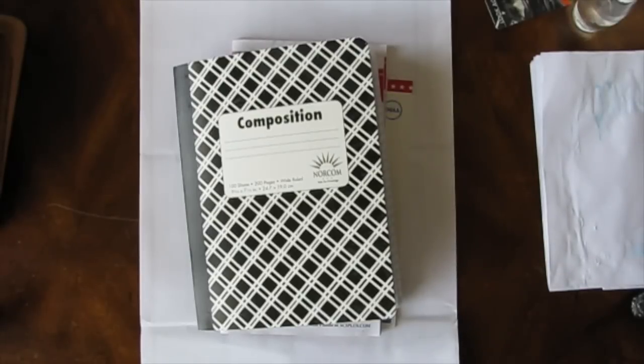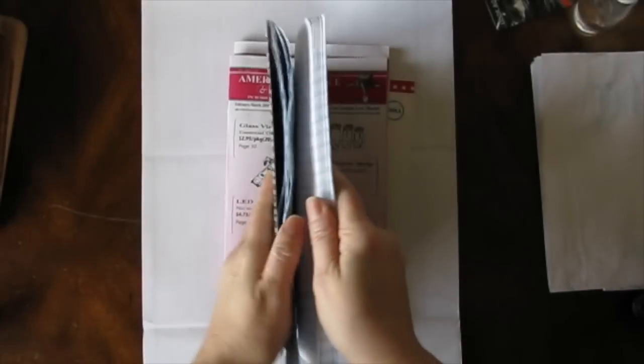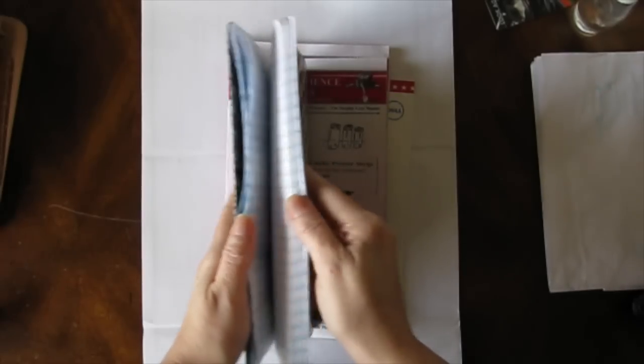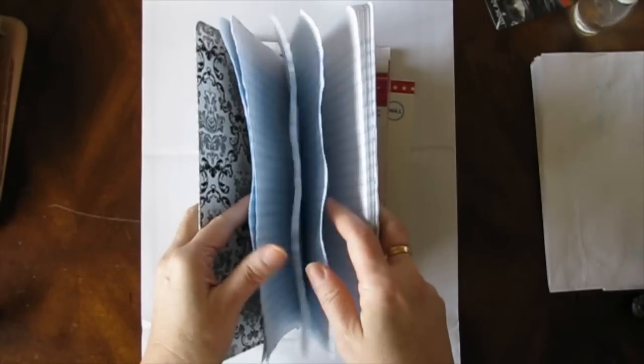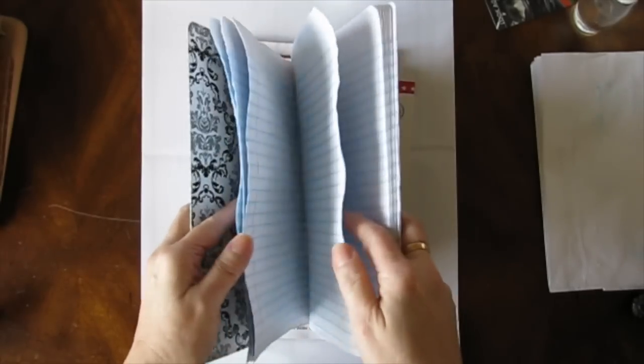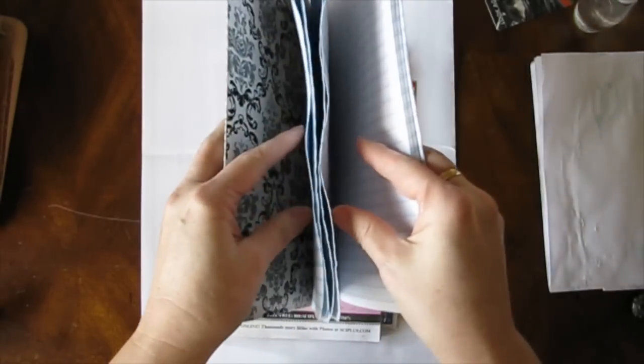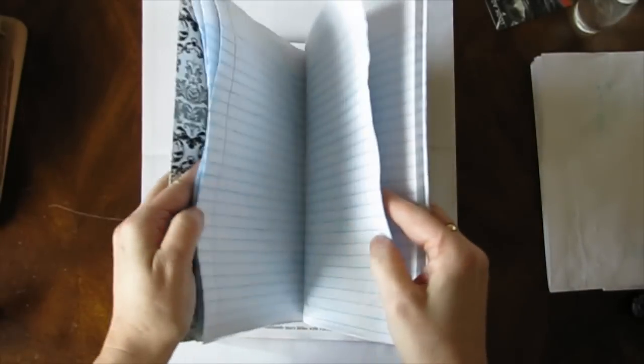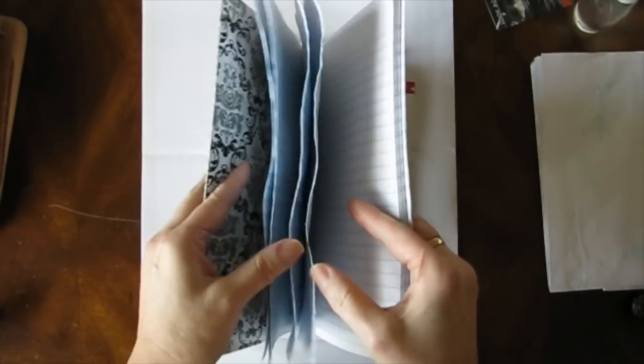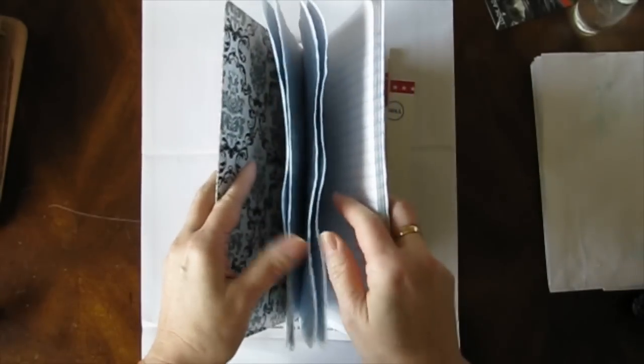I totally forgot what I was talking about, but it had something to do with gluing pages together, right? If you glue pages together in a composition book, chances are they're going to buckle like this. Sometimes they're way bucklier, sometimes not quite so buckled. It just depends on the adhesive that you use.